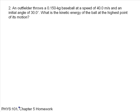An outfielder throws a 0.15-kilogram baseball at a speed of 40 meters per second at an initial angle of 30 degrees. What is the kinetic energy of the ball at the highest point in its motion?